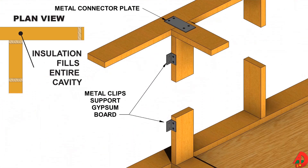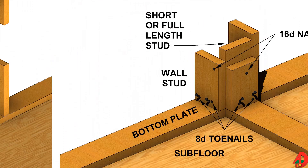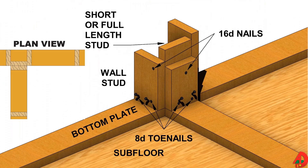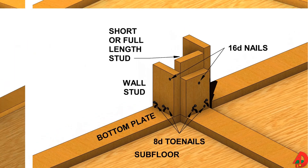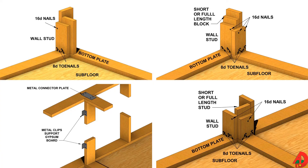Bottom left, we can see an inside corner using metal clips — insulation can fill the entire wall cavity. Bottom right, inside corner construction using a block laid flat. A full-length stud can be used instead of a block. All corner posts should be constructed from straight studs and should be well nailed.